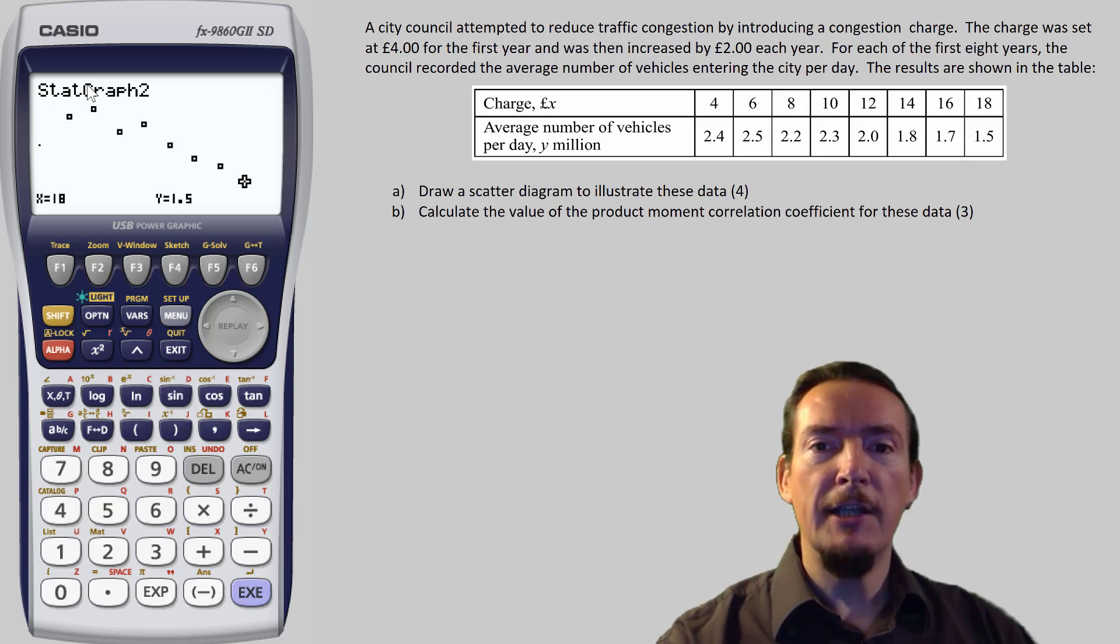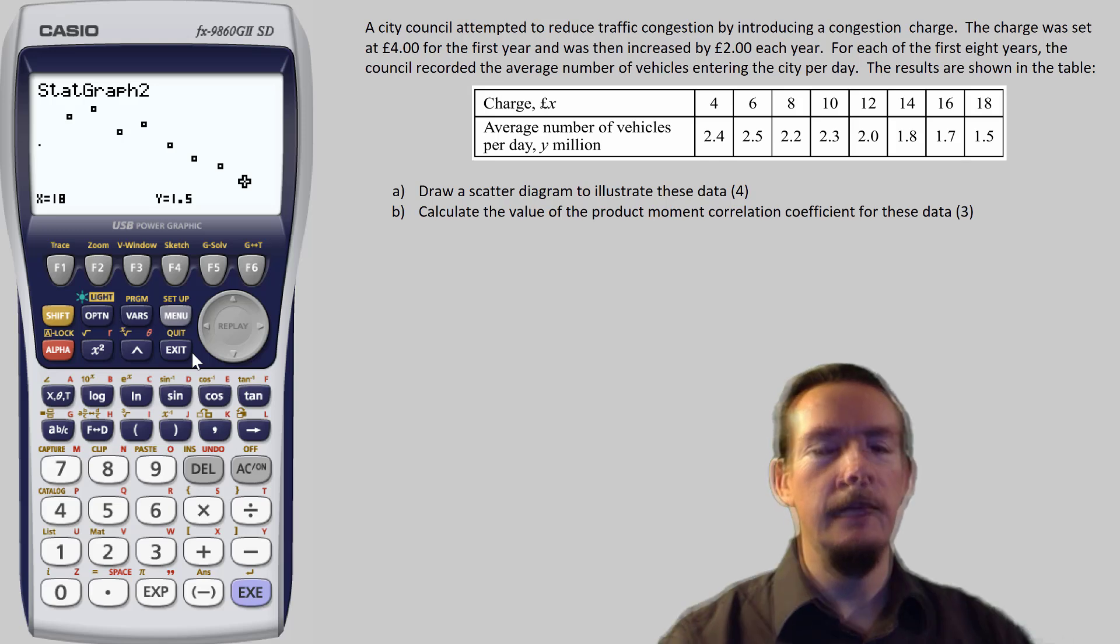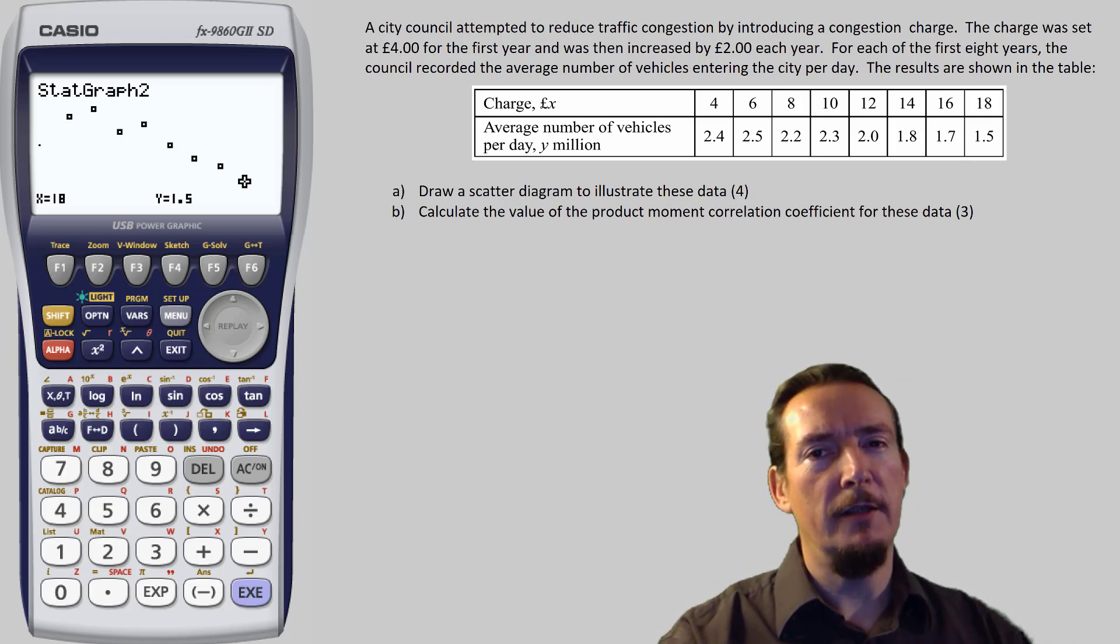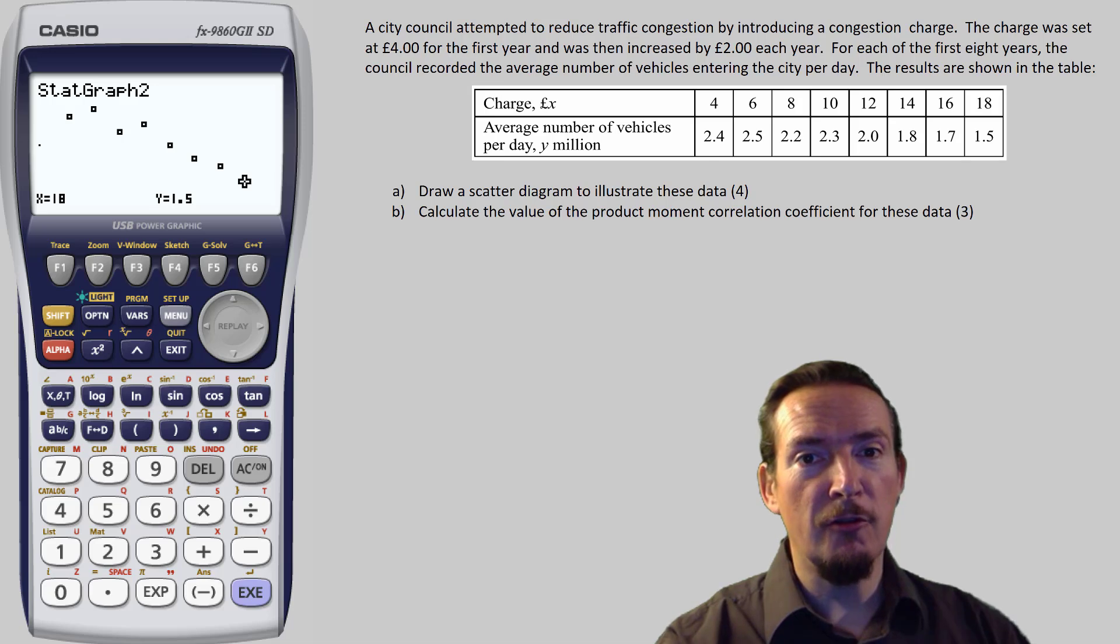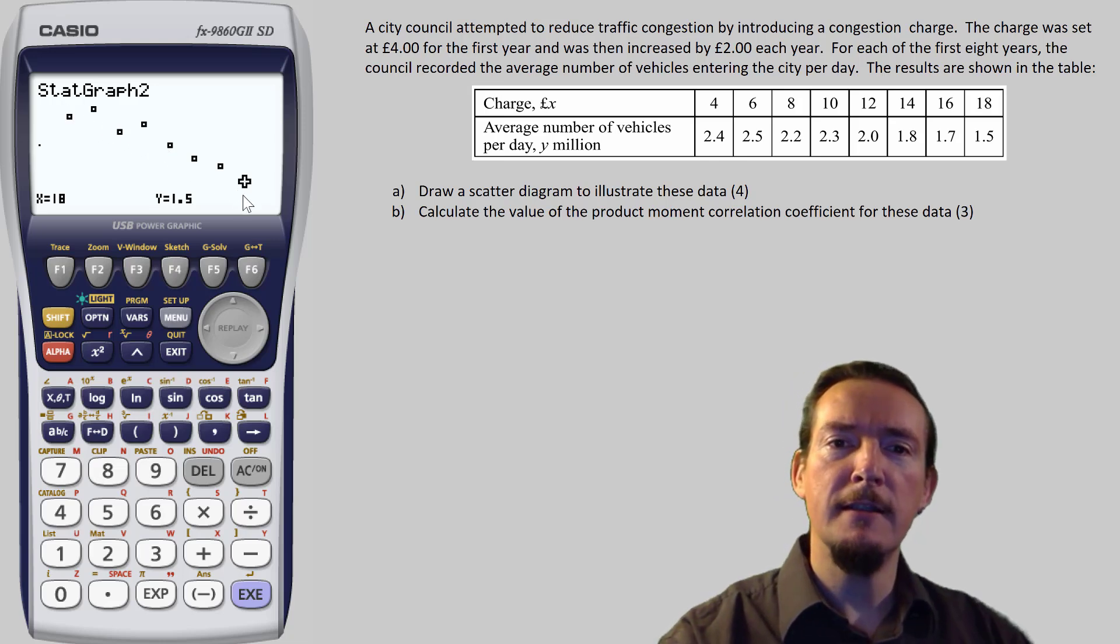So having drawn your graph and checked it with your calculator, we are ready for the main event, calculating PMCC. Now PMCC is always a number between 1 and minus 1, with numbers close to 1 showing strong positive correlation and close to minus 1 showing strong negative correlation. We have already noted that our scatter graph clearly shows strong negative correlation, so we are expecting an answer around negative 0.9 here.